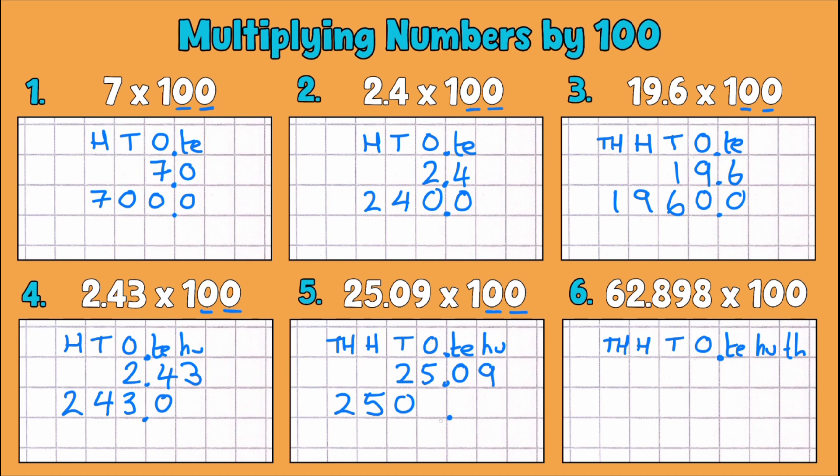And our 9 hundredths becomes 9 whole ones. So 2,509 or 2,509.0.